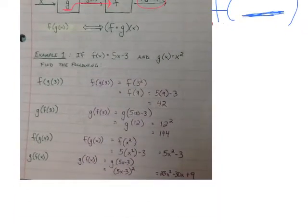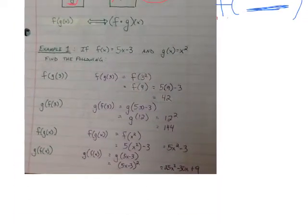What I have here is we're told the rule f, which is 5x minus 3, and we're told the rule g, which is x squared. And we're asked to find the following: f of g of 3, which we could notate like this. It looks kind of like fog, and then of 3.